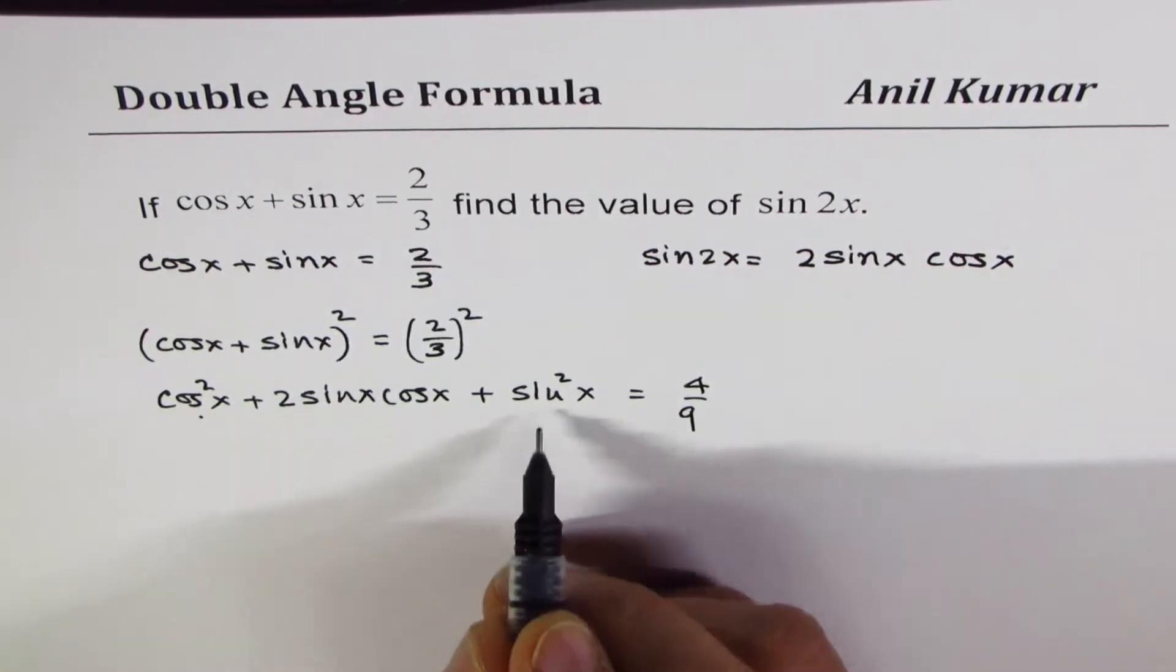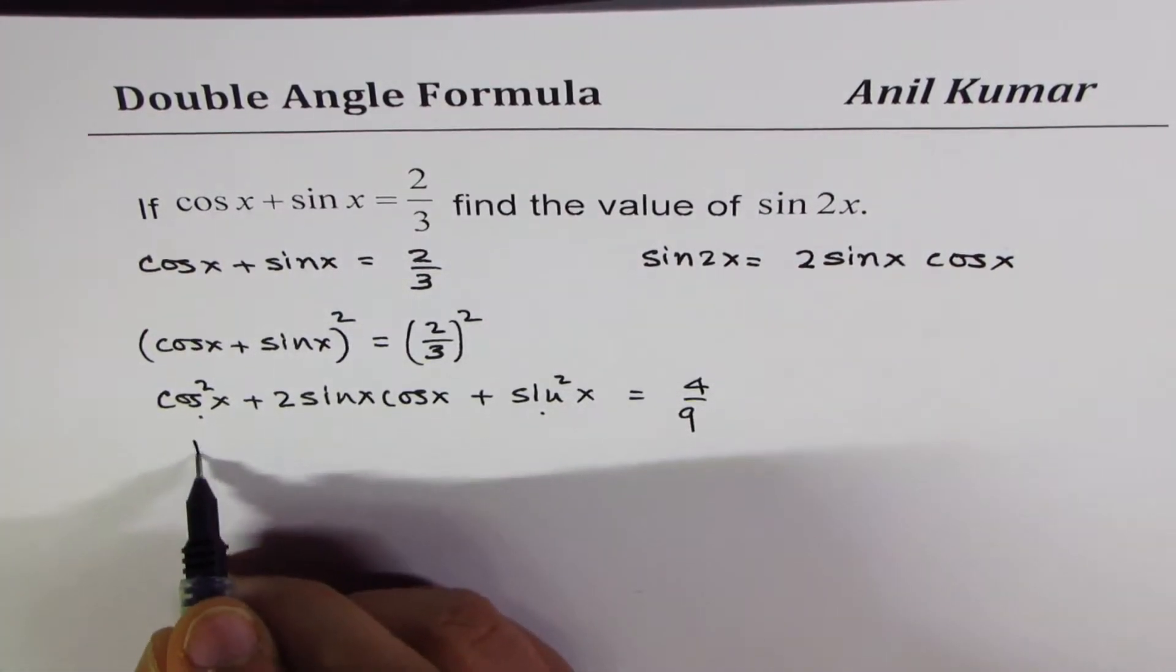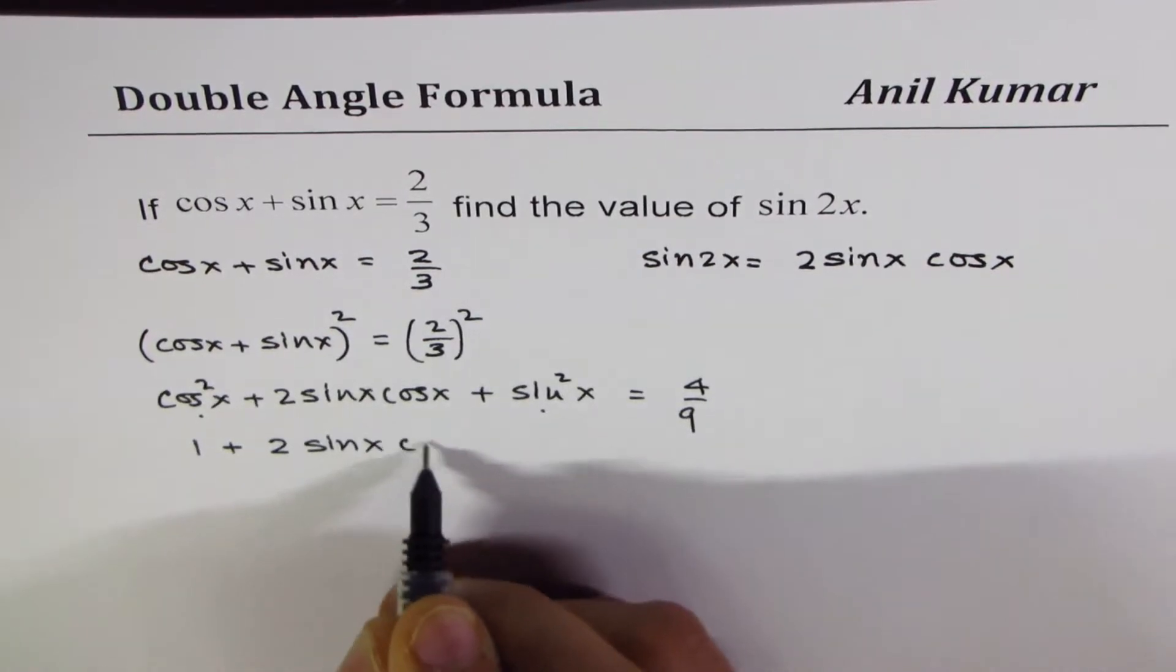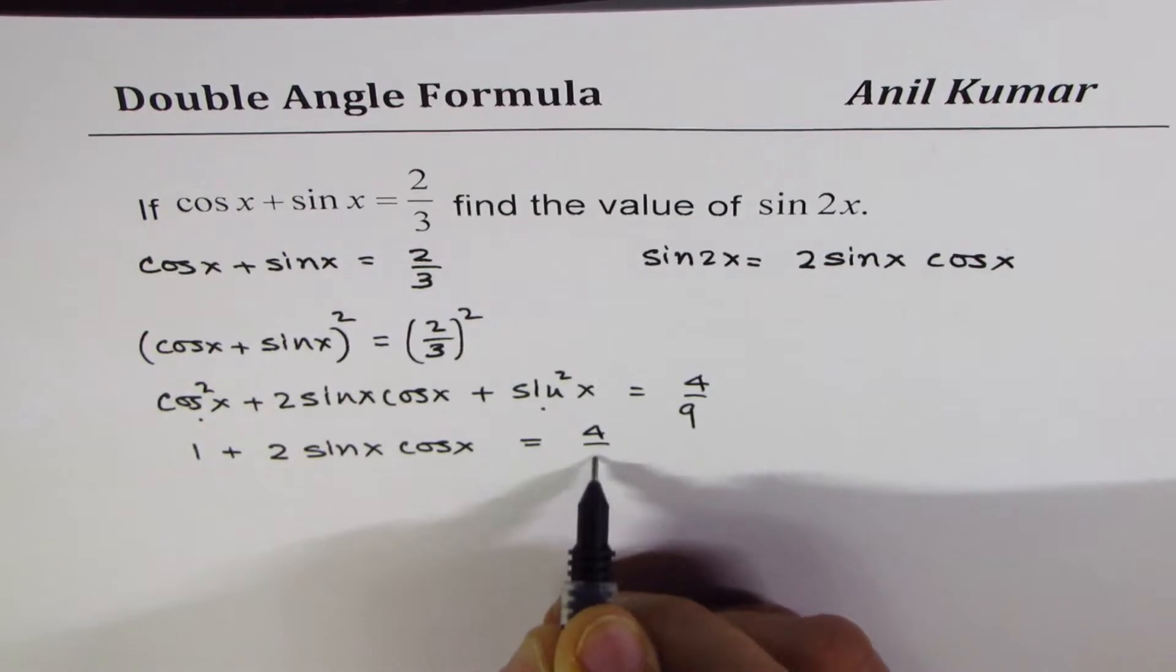Now, cos square x plus sin square x is 1. So I could write this as 1 plus 2 sin x cos x equals 4 over 9, right?